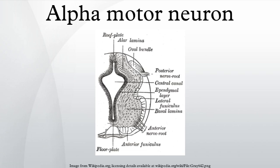There is similar somatotopy for alpha motor neurons that innervate flexor muscles, which tend to be located in the dorsal portion of lamina 9, while those that innervate extensors tend to be located more ventrally. Like other neurons, lower motor neurons have both afferent and efferent connections. Alpha motor neurons receive input from upper motor neurons, sensory neurons, and interneurons. The primary output of alpha motor neurons is to extrafusal muscle fibers. This afferent and efferent connectivity is required to achieve coordinated muscle activity.